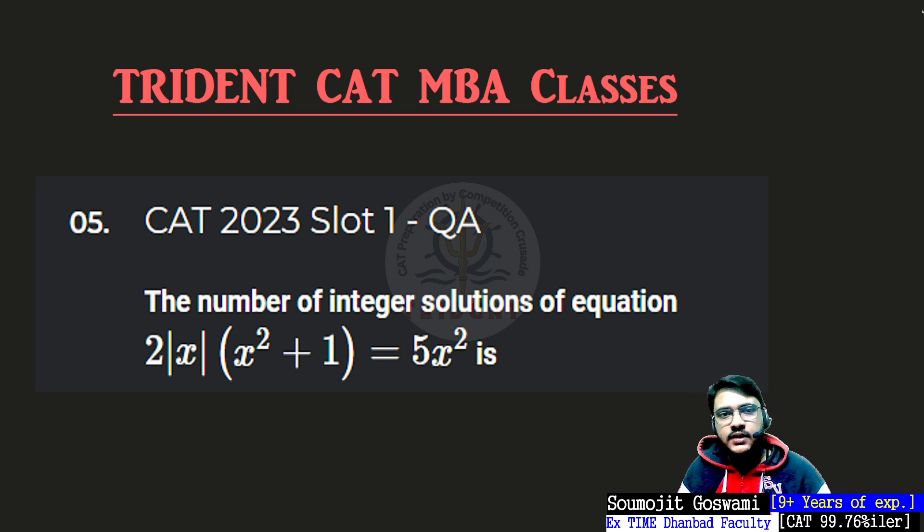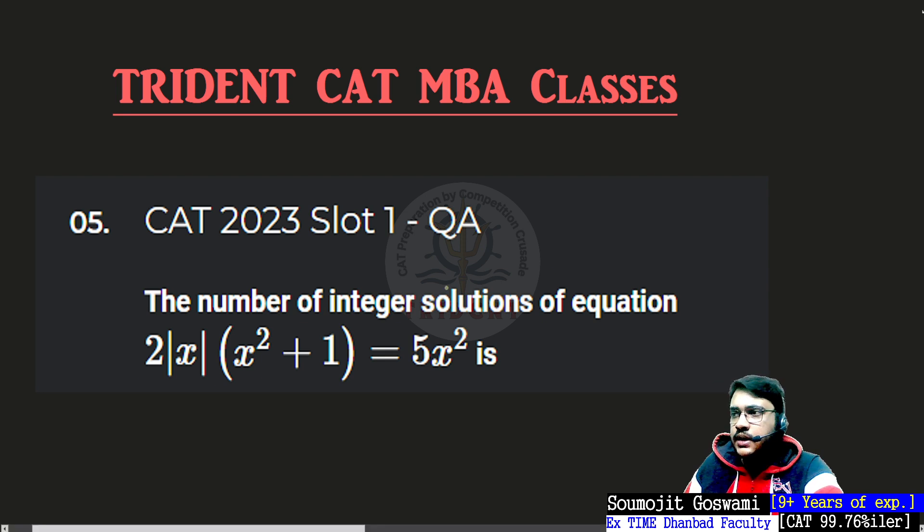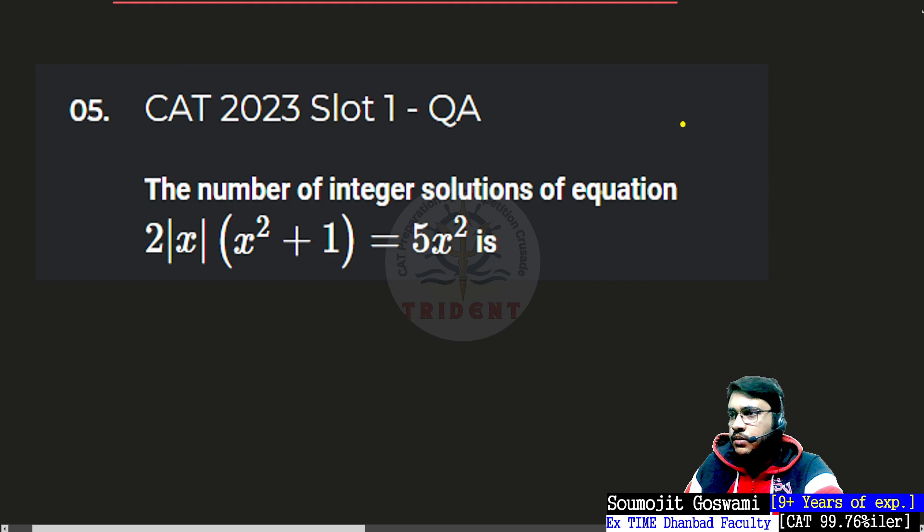Hello, let's look into this question. This is taken from CAT 2023 Slot 1 QA algebra question. Let's read the question, try and understand what it's all about, and then we'll look at what we could have done. The question says the number of integer solutions to this equation, and it's a very sweet simple equation.